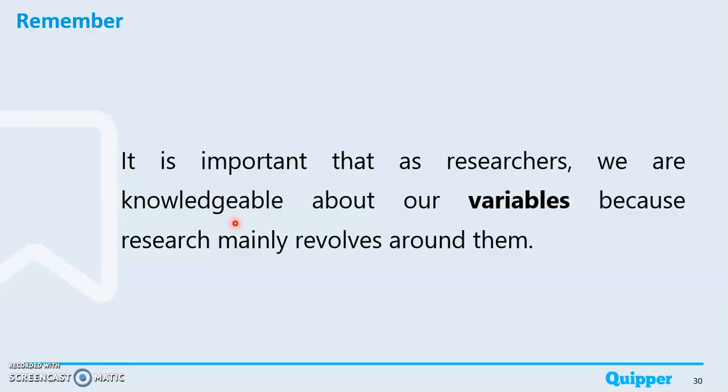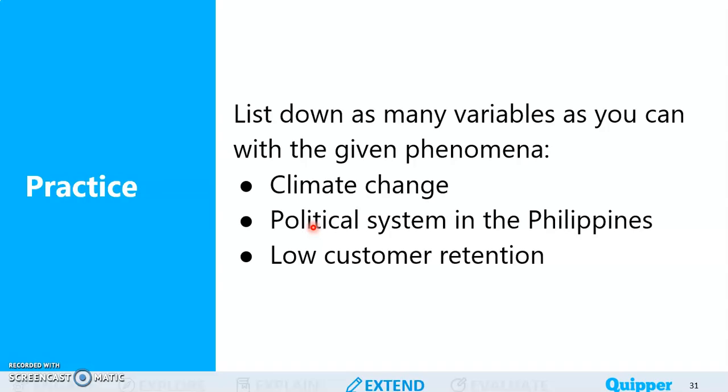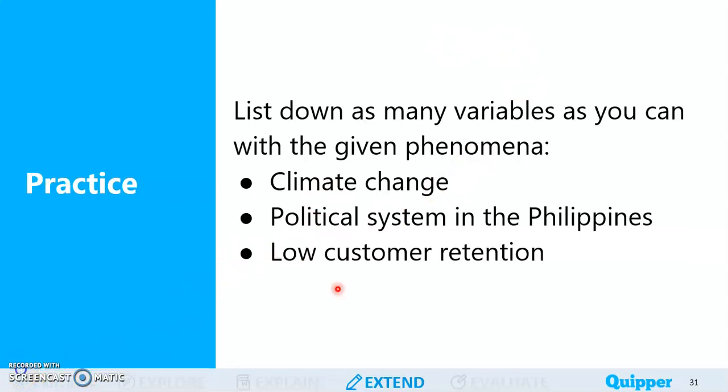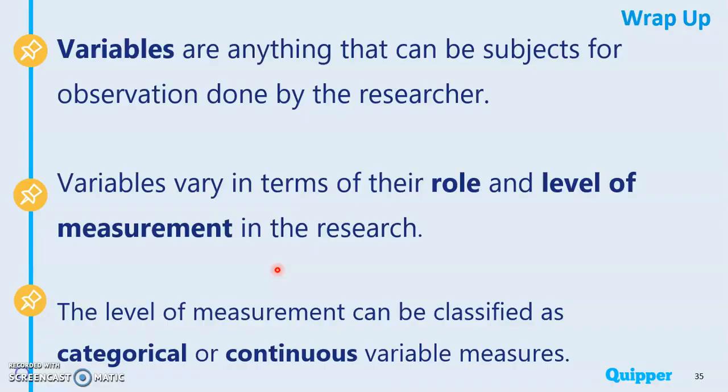It is important that as researchers, we are knowledgeable about our variables because research mainly revolves around them. We have to know the types of variables that we have in our research. So let's practice. List down as many variables as you can with a given phenomenon: climate change, political system in the Philippines, low customer retention.